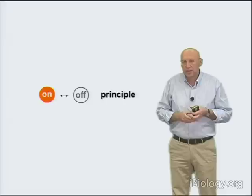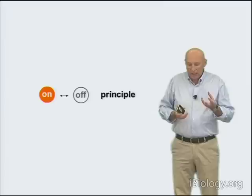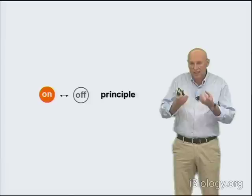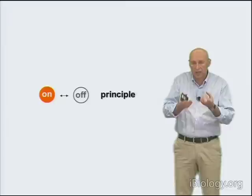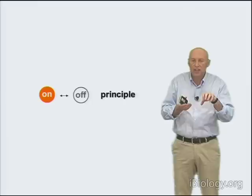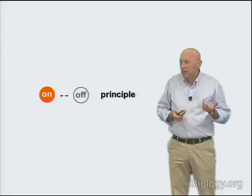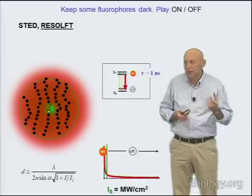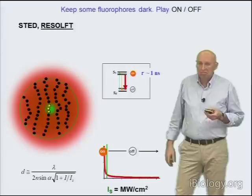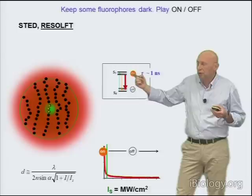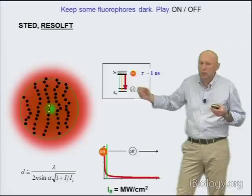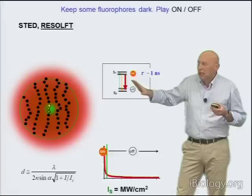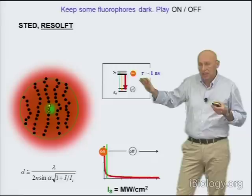Returning to the basic principle: in STED microscopy, we separate adjacent features by making sure they are not capable of emitting at the same time — this one is off when that one is on — by applying a beam of light that determines where features are on and where they are off. This principle is very fundamental, because there are several molecular mechanisms imaginable for separating features by on-off. STED was the first method, probably because the most fundamental way of turning off a fluorophore is to send the molecule from the excited state down to the ground state — there is nothing more fundamental than that. Because of that, the concept of STED microscopy is very universal; you can apply it to basically any fluorophore.